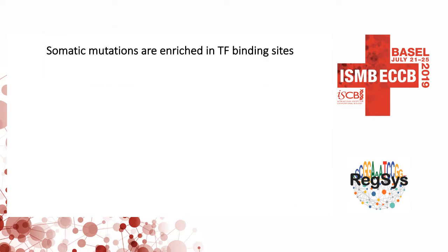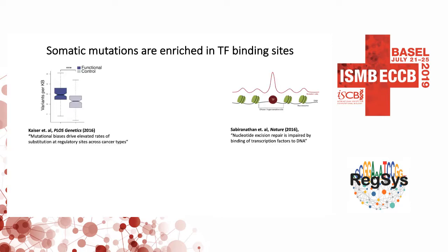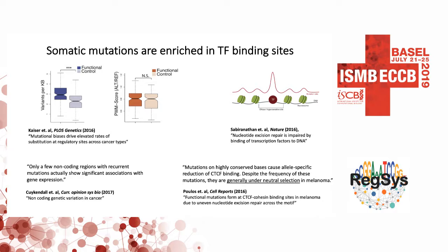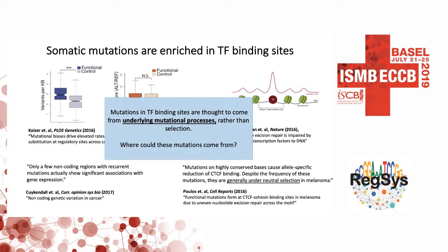We start by looking at cancer mutations in whole genome data that's been recently made available. The general observation is that transcription factor binding sites show an enrichment, whether you look at rates compared to the flanks or versus a control. However, the nature of these mutations is not rather clear. Looking at how they impact binding, there's no clear directionality to whether they improve or decrease binding. Similarly, very few of these recurrent mutations actually show any sort of association with gene expression, and in specific cases, people have been unable to find any evidence for selection. So a general overview in the community seems to be that mutations within these sites probably come from some underlying processes rather than from selection by the cancer cell.